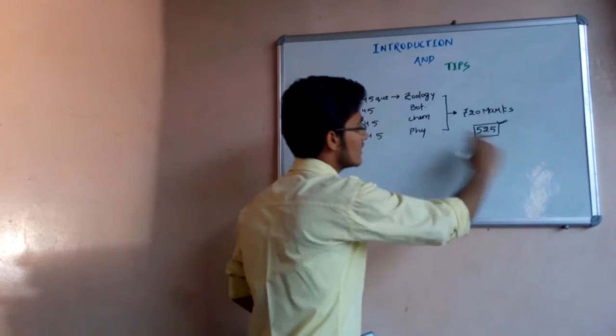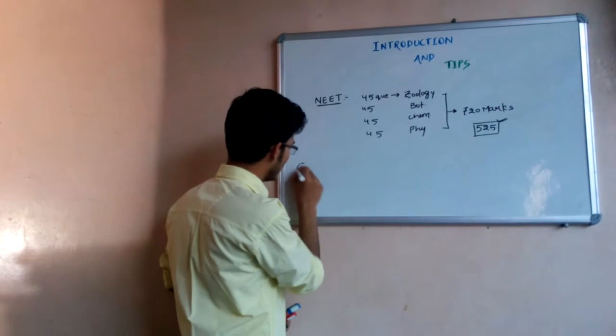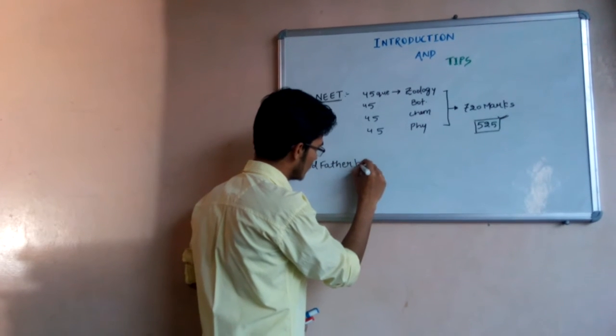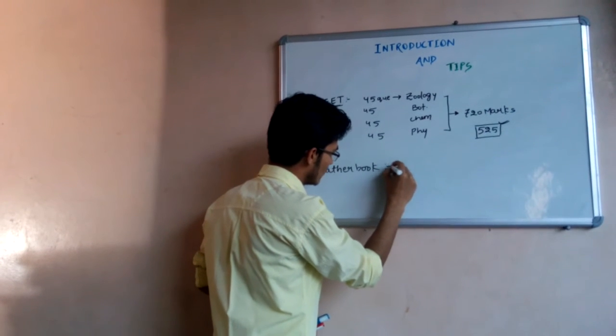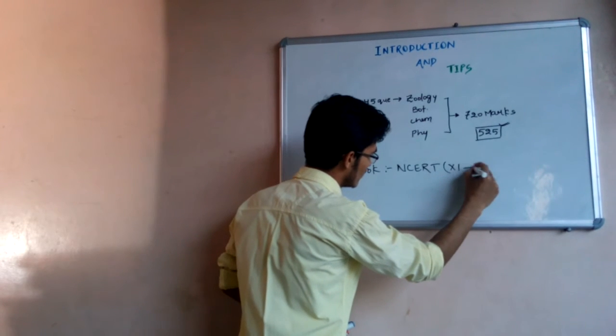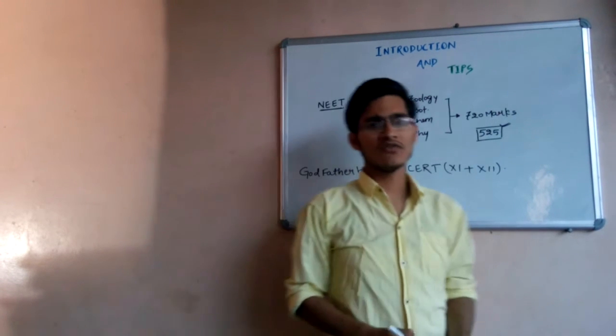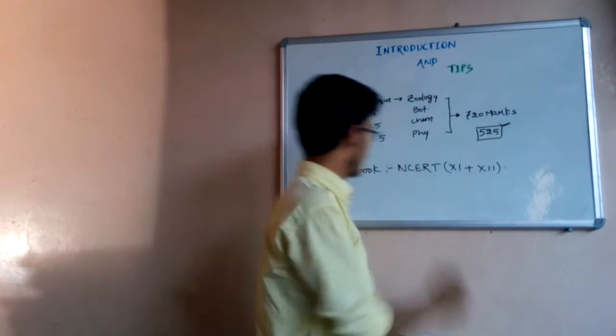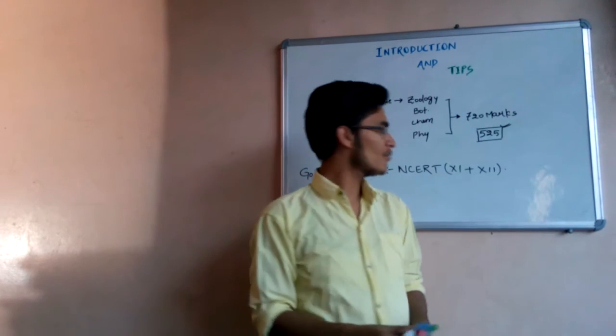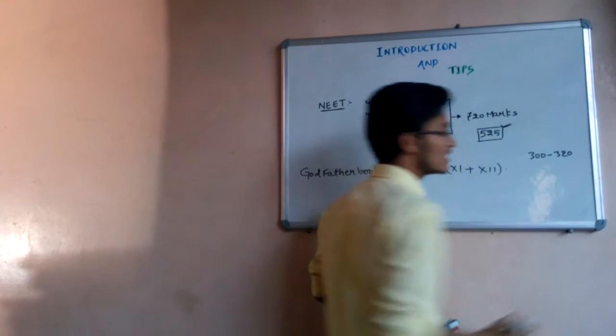For biology, there is a godfather book, which is the NCERT. You need to memorize each and every line of NCERT books for biology of 11th as well as 12th class. These are very essential books, and approximately 300 to 320 marks out of 360 in biology are directly from NCERT books.